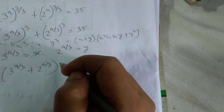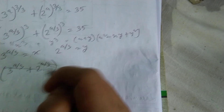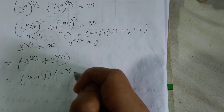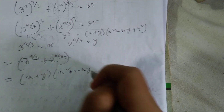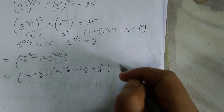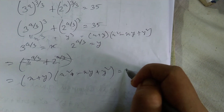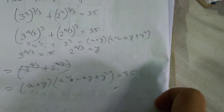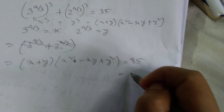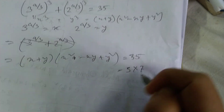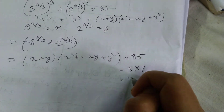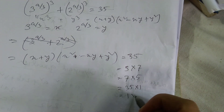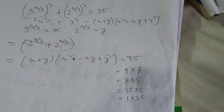So (x + y)(x² - xy + y²) = 35. Now 35 can be factored as: 5×7, 7×5, 35×1, and 1×35.